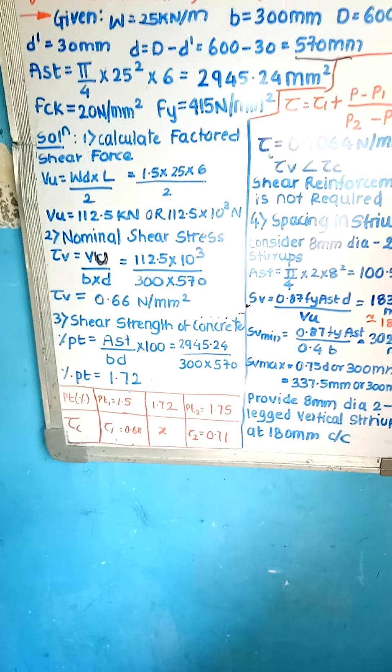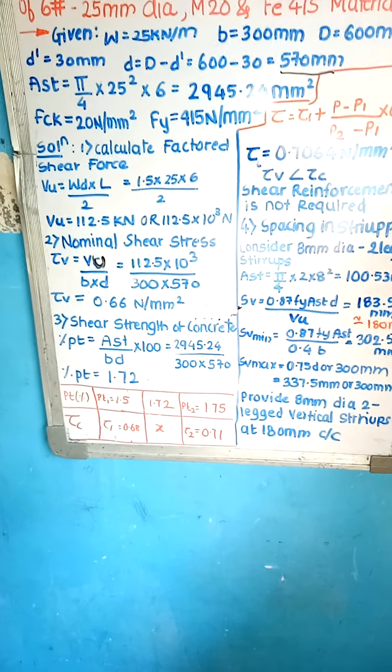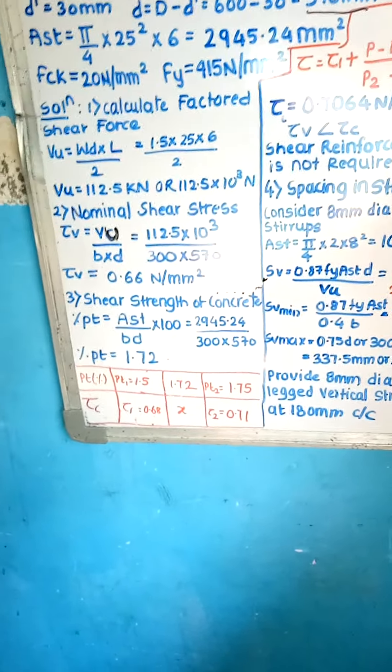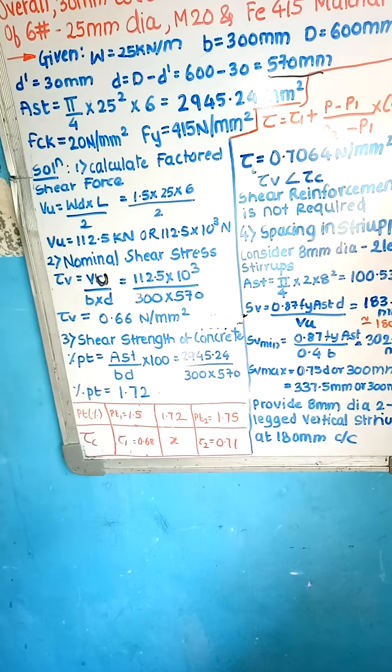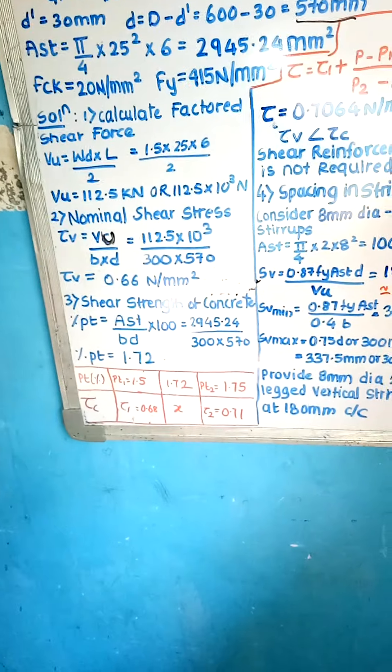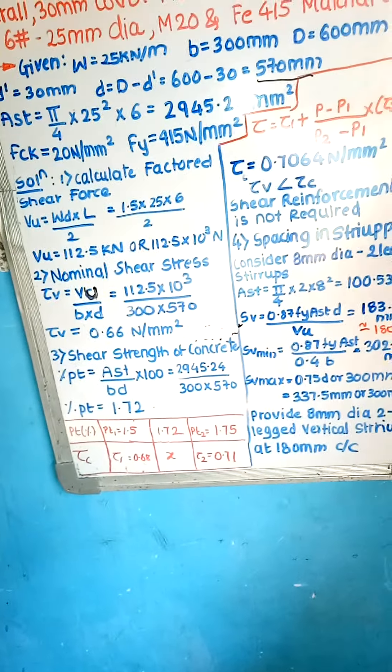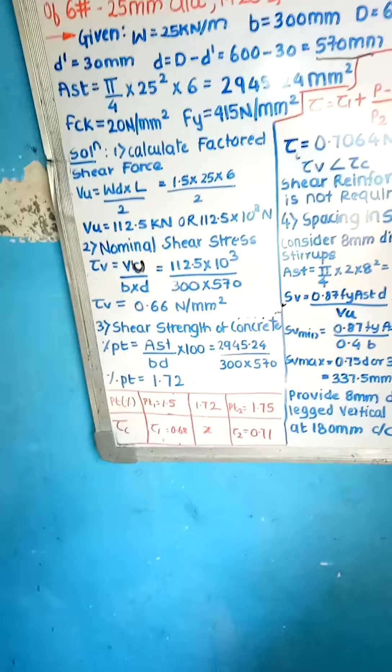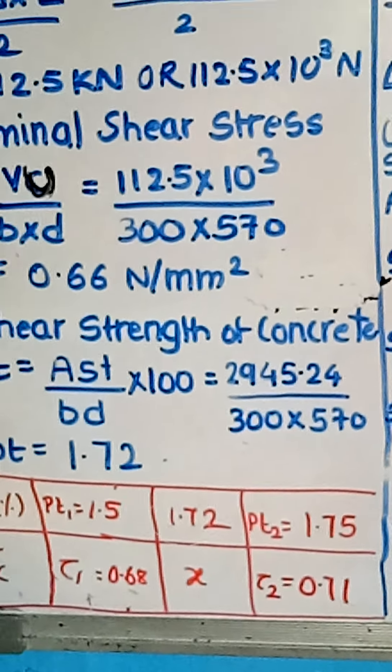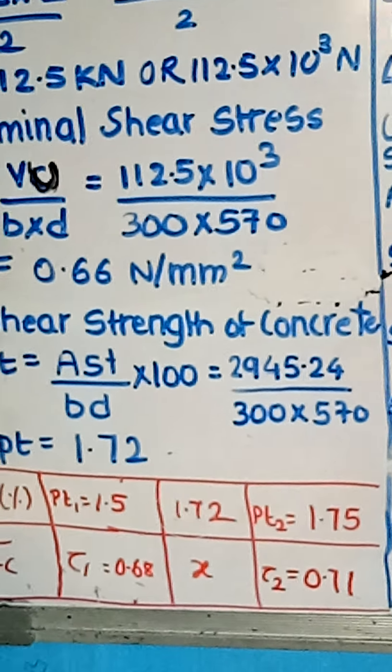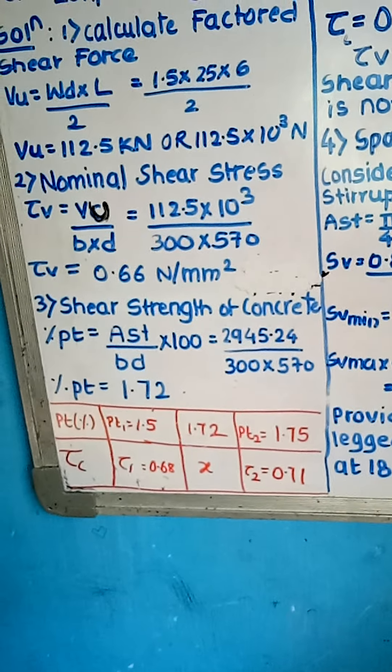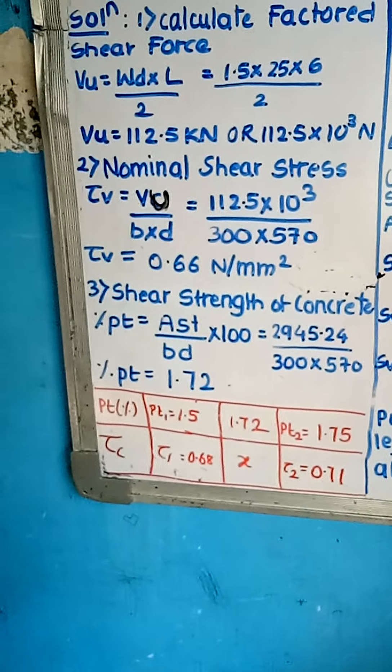Now third step: Shear strength of concrete. We need to calculate Pt limit, which is equal to AST upon effective area multiply by 100 percentage. We need Pt percentage. AST we already calculated, which is 2945.24 divided by 300 into 570 into 100. So our Pt, percentage of steel, is 1.72.